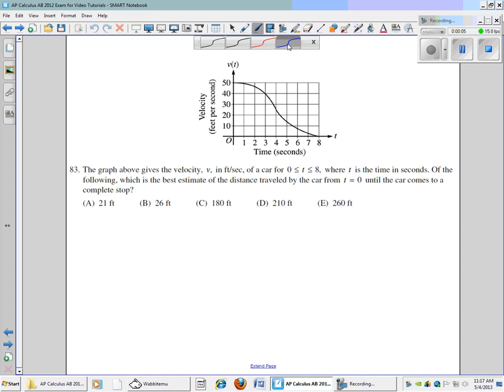This is problem number 83 of the 2012 AP Calculus exam. The graph gives the velocity v in feet per second of a car for the interval from time t greater than or equal to 0 and less than or equal to 8, where t is the time in seconds. Of the following, which is the best estimate of the distance traveled by the car from time t equals 0 until the car comes to a complete stop.